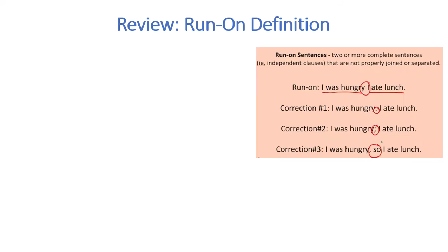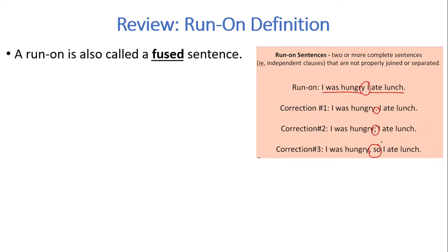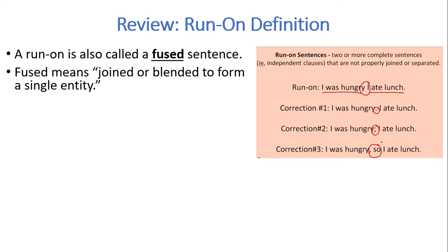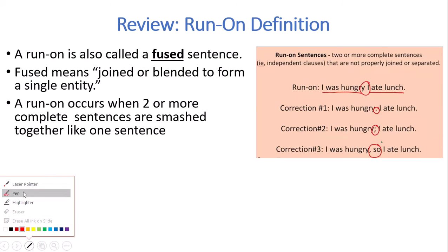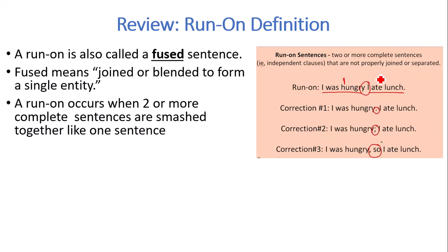Review the run-on definition: two or more complete sentences are not properly joined or separated. A run-on is also called a fused sentence. Fused means joined or blended to form a single entity. A run-on occurs when two or more complete sentences are smashed together like one sentence — for example, 'I was hungry, I ate lunch.' Independent clause, independent clause, nothing in between.